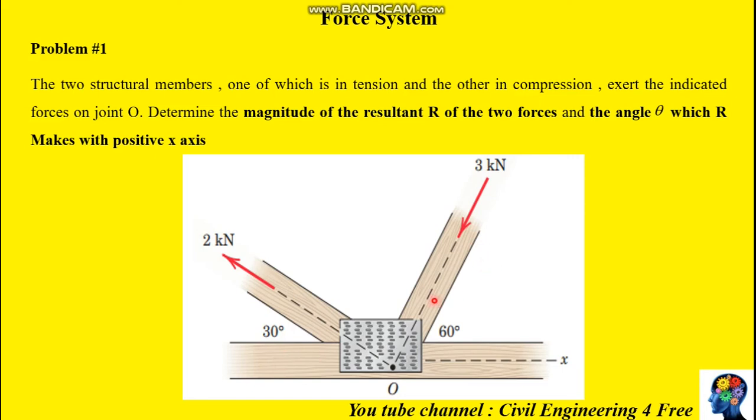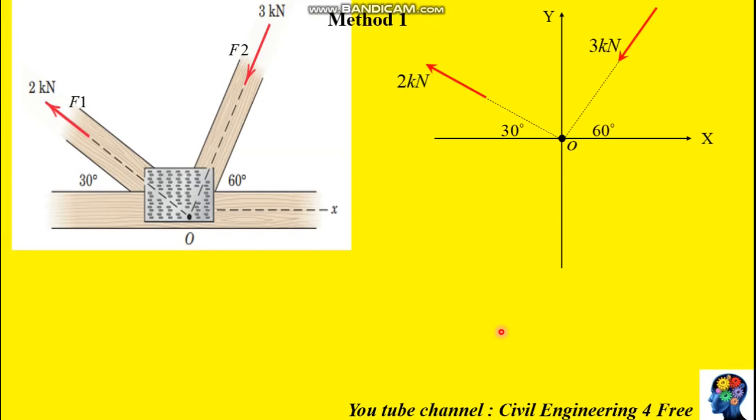We have two methods of determining the magnitude of the resultant. The first method uses force components. You have 2 kilonewton and you have 3 kilonewton.